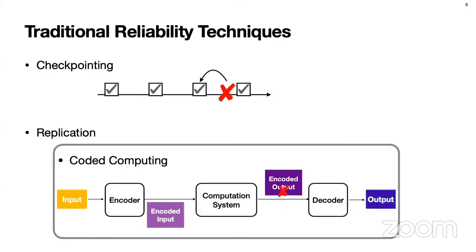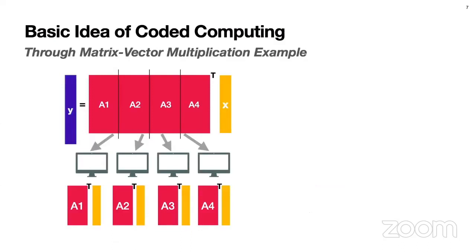Encoded computing aims to reduce this 2x redundancy of replication. So instead of building a simple replica, can we use some sort of encoding to add just a little bit of redundancy to the encoded input? We put the encoded input into the computation system, it pops out the encoded output, which is a little bit bigger than the original output. And we want to recover the original output through decoding, even if we lose some part of the encoded output.